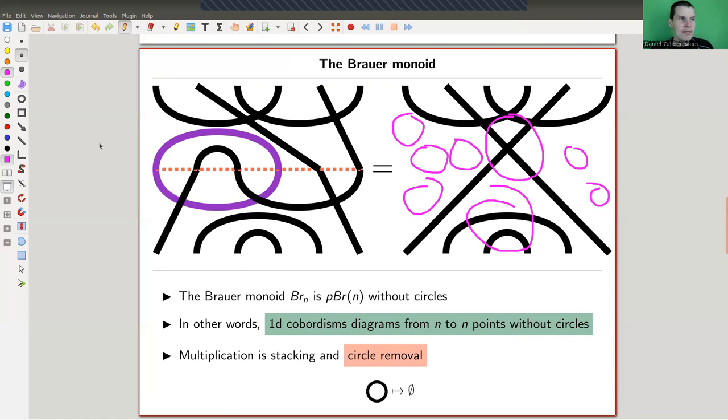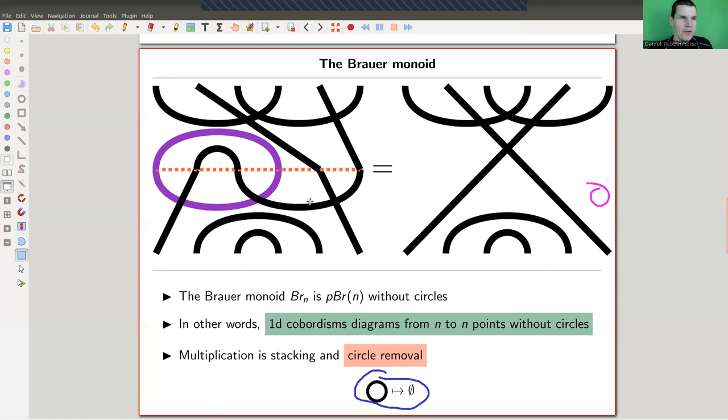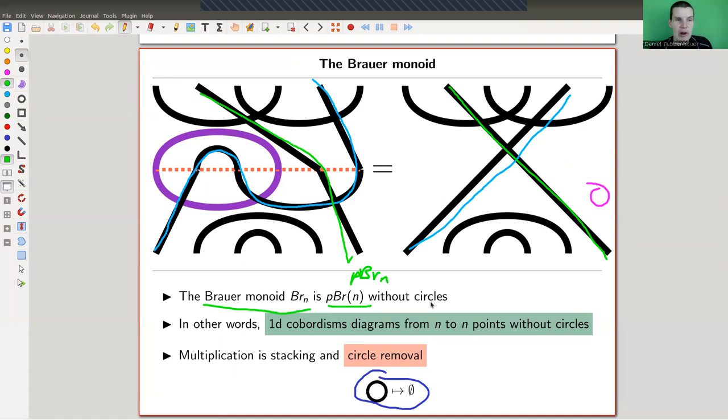In order to make it finite, you use the following trick. Whenever you see a circle, you just remove it from the picture. So in this multiplication, you can just get rid of this picture and simplify the picture accordingly. This guy goes all the way to here, and this one here goes all the way to here. So it's really just cobordism without circles. We just remove the circles. And what you get is the Brauer monoid. You just want to make it finite. So you remove circles.